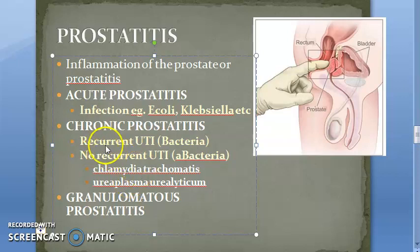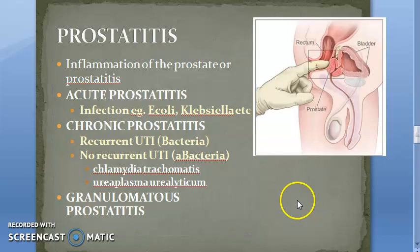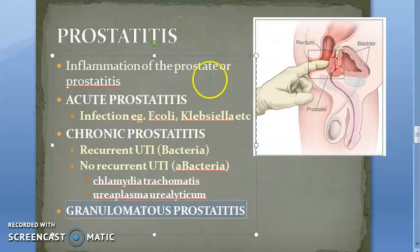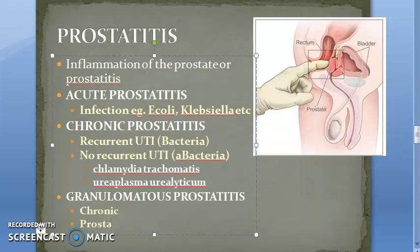The distinction is that bacterial chronic prostatitis has recurrent UTI, whereas the Chlamydia/Ureaplasma type does not. Grossly in prostatitis you will see the prostate is enlarged, swollen, and tense with necrosis. Histologically, the acini are dilated and filled with neutrophilic exudate. Granulomatous prostatitis is a variant of chronic prostatitis where there is leakage of prostatic secretions into the tissue.